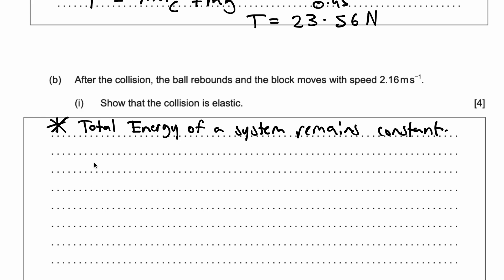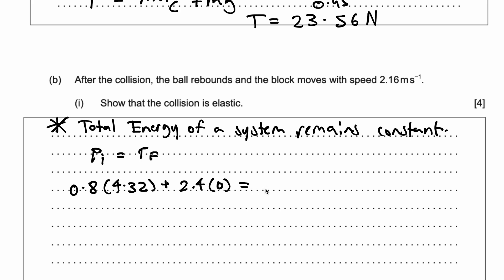Momentum initial equals momentum final. Momentum initial: the mass of the ball, 0.8, times its velocity, 4.32, plus the mass of the block, 2.4, times its velocity which is 0 because it's not moving. This equals 0.8 times the rebound velocity — which is what I want to calculate — plus 2.4 into the speed of the block after it's been hit, which is 2.16. This is how the system reacts to the interaction between the block and the ball.